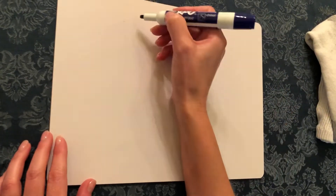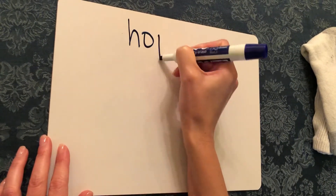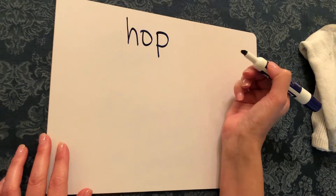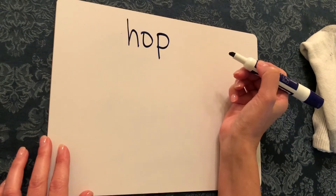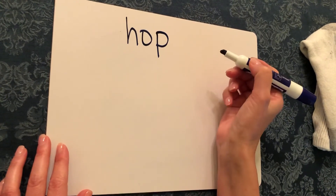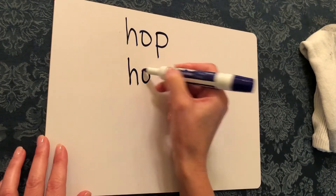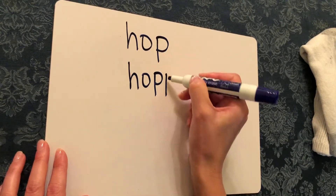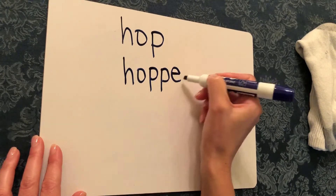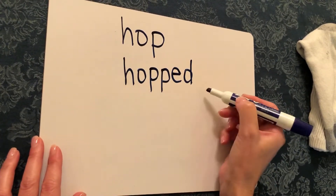For example, let's use the word hop. We're going to double the consonant P before adding our suffix. So let's double our consonant P and add the suffix ED — and that makes the word hopped.